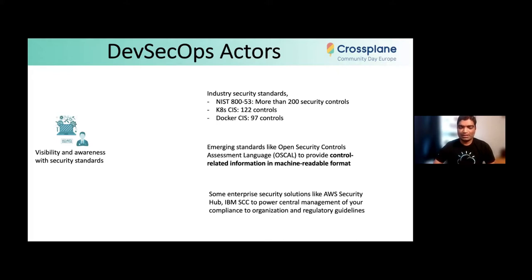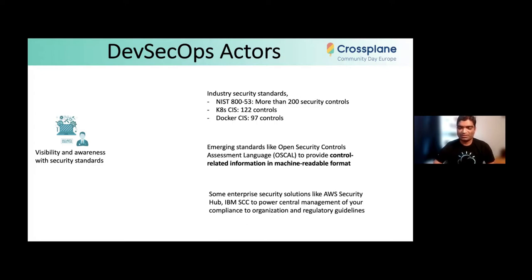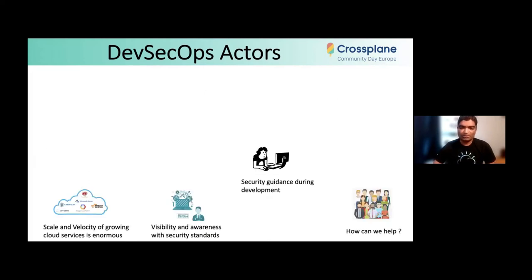As a security director, you need visibility and awareness across security standards and must evaluate the posture of your cloud infrastructures and workloads. There are industry standards like NIST, Kubernetes CIS, and Docker CIS that cover various security controls across workloads, Kubernetes core services, and cloud services. The sheer numbers are huge, so we need automation. Emerging standards like OSCAL provide control information from security standards in a machine-readable format. Enterprise solutions like AWS Security Hub or IBM Security and Compliance Center power centralized compliance management across organizations.